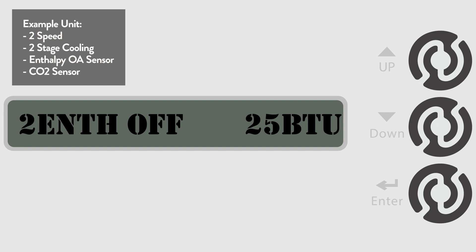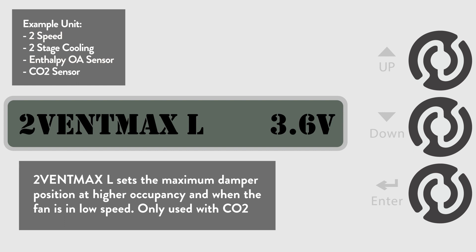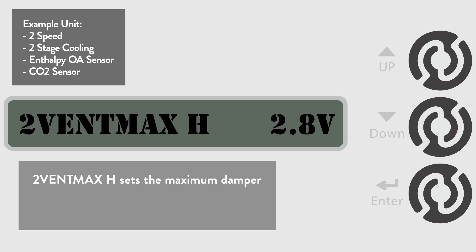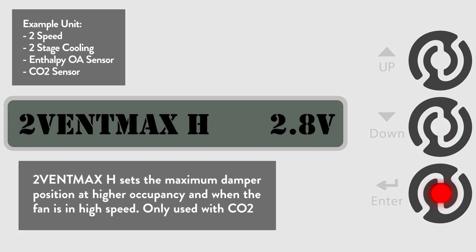Go to the 2 Vent Max L menu to set the CO2 sensor's maximum non-free cooling position when the unit is in low speed. The default is 3.6 volts, but let's change that to 3.4 volts. Go to the 2 Vent Max H menu to set the CO2 sensor's maximum non-free cooling position when the unit is in high speed. The default is 2.8 volts, but we are going to change that to 2.6 volts.